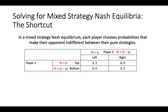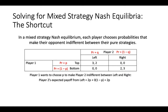To use the shortcut method, we must keep in mind that in a mixed strategy Nash Equilibrium, each player will choose the probabilities that make their opponent indifferent between their pure strategies. Consider the problem from player 1's perspective: player 1 wants to choose p in order to make player 2 indifferent between playing left and playing right. If player 1 plays top with probability p and bottom with probability 1-p, then player 2's expected payoff from playing left is 2 times p.